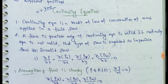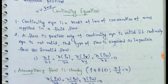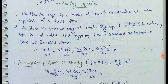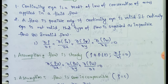Next: continuity equation. It is a very important equation. The continuity equation is a result of the law of conservation of mass applied in fluid flow. A flow is possible only if the continuity equation is valid. If the continuity equation is not valid, the type of flow is regarded as impossible flow or invalid flow.